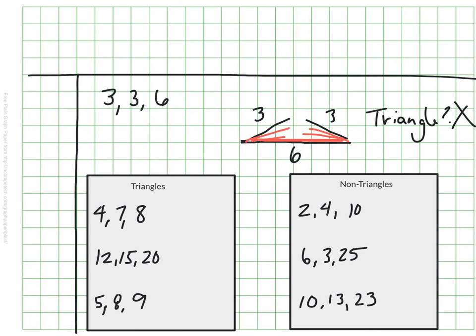So maybe you noticed that if I added the two small numbers here, 4 plus 7, I get 11. And 11 is bigger than the other side, which is 8. On this one, my two smallest sides are 12 and 15. And when I add those together, I get 27, which is bigger than the third leg. And if I look at my third example, 5 and 8, well, that makes 13, and that is larger than 9.